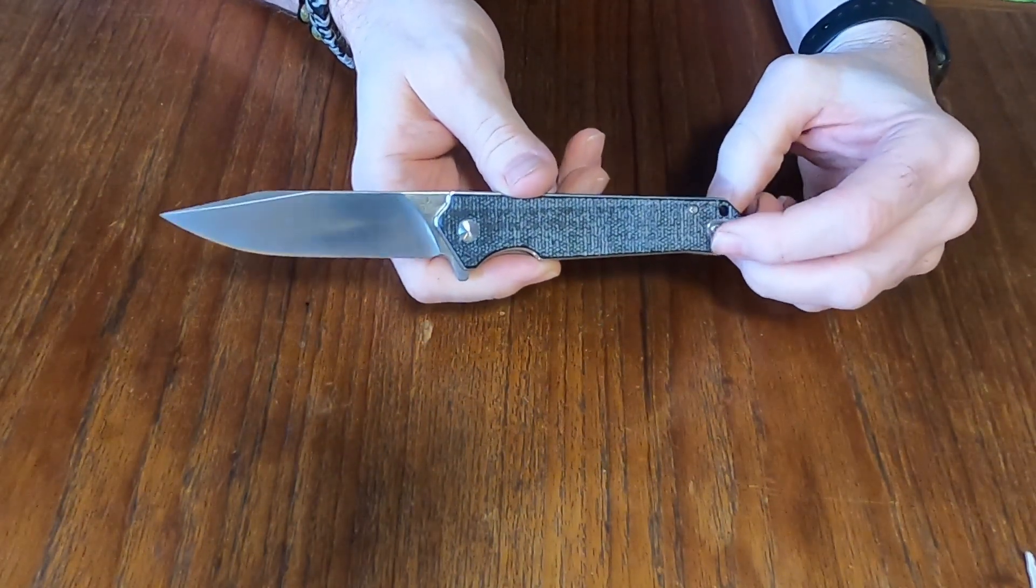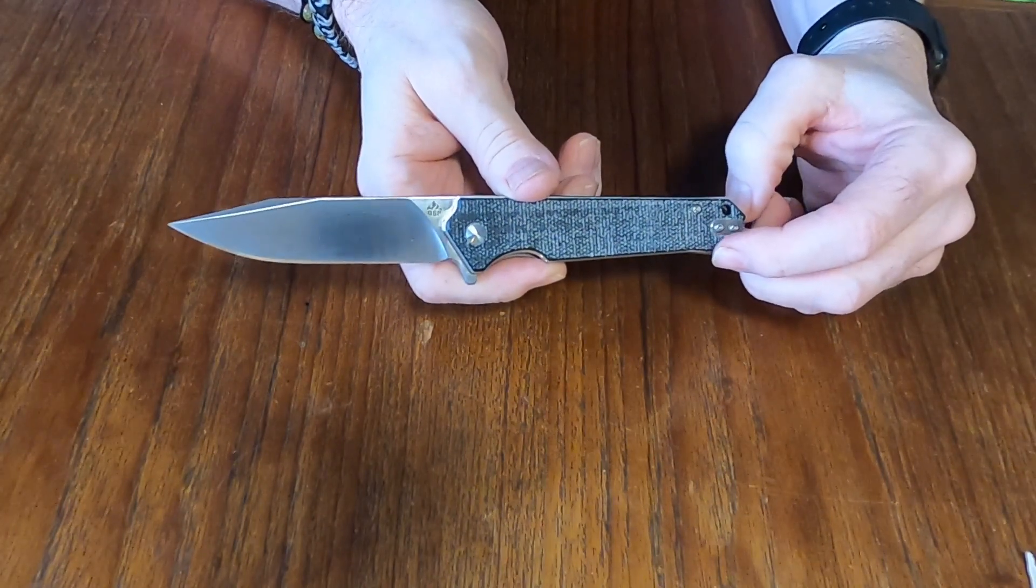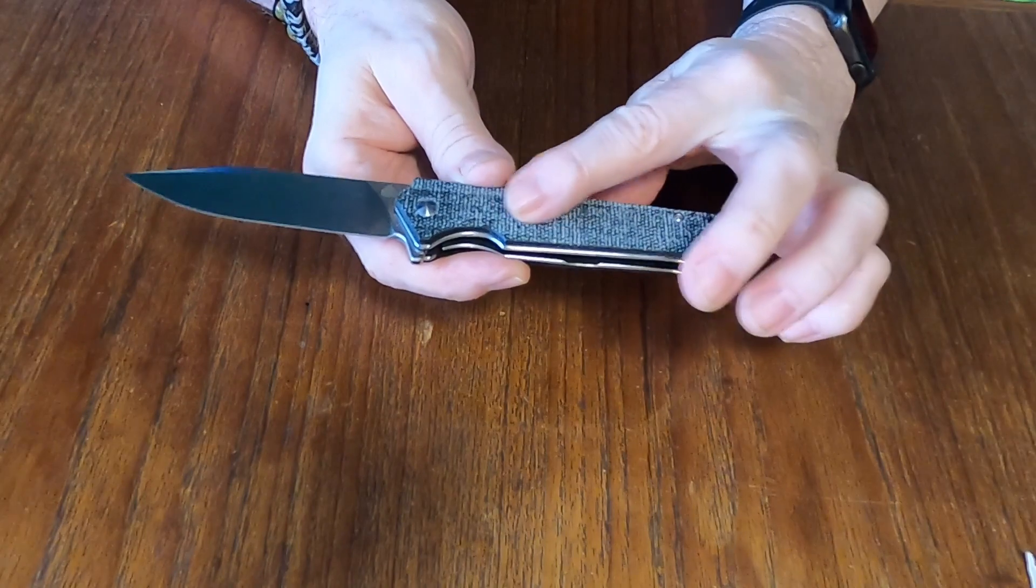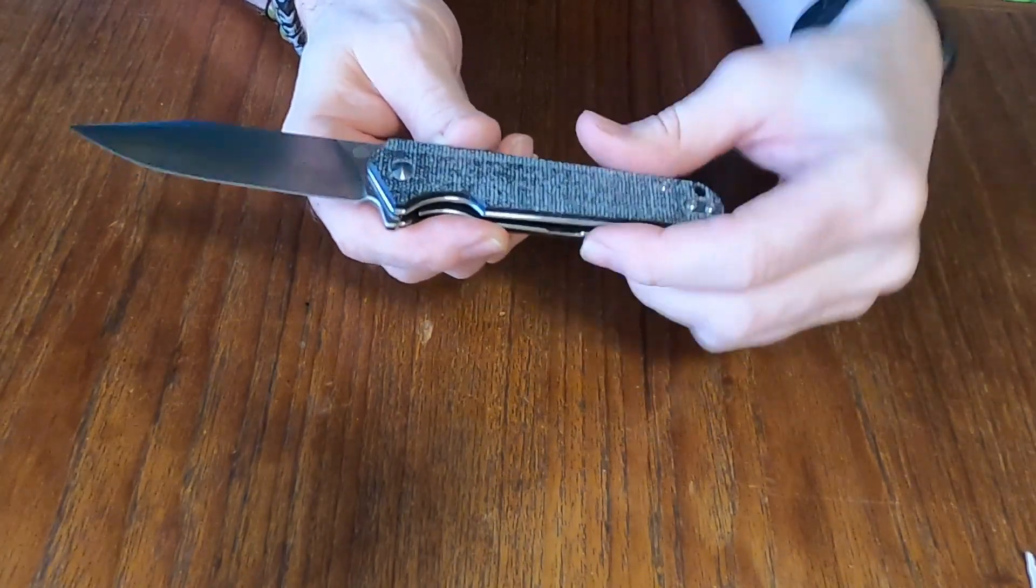The weight on this is 3.3 ounces and we've got black micarta handle with stainless steel liners that are skeletonized to reduce weight a bit.